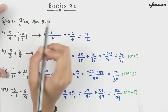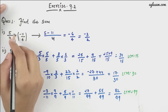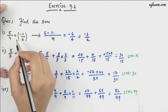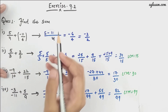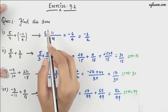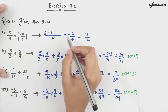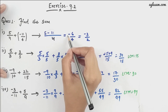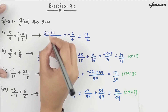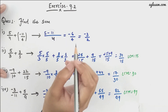Our first question is: find the sum. We have 5/4 plus (-11/4). Since the denominators are the same (4), we compute 5 minus 11, giving us -6/4. The minus sign appears because the minus is in front of the bigger number, 11. Simplifying, we get -3/2.